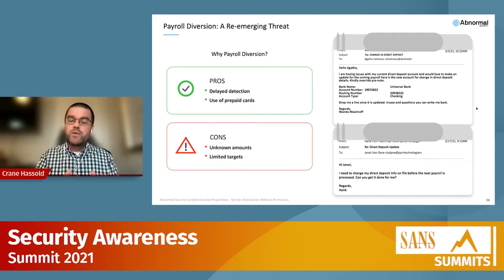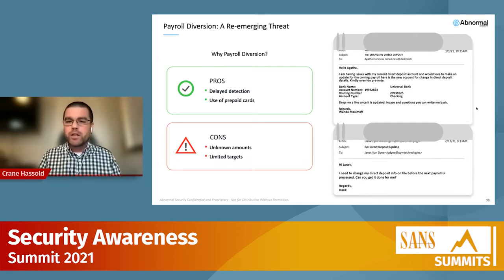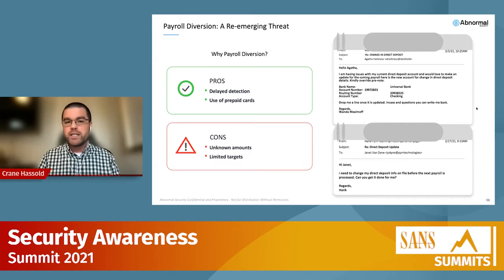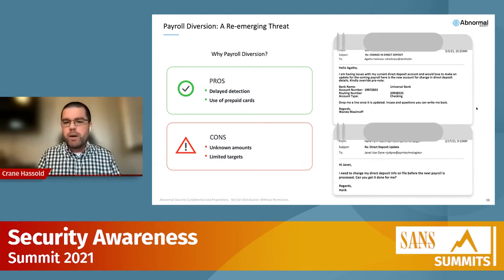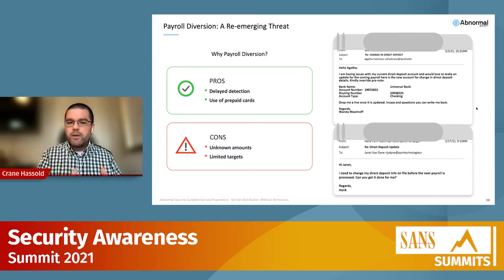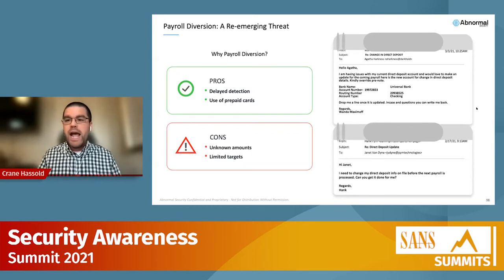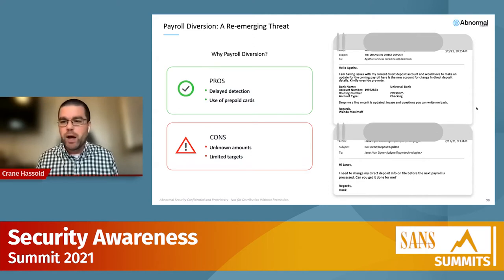Since the middle of last year, we've seen an almost consistent month-over-month increase in payroll diversion, now about 25% of all monthly BEC attacks. Detection is usually delayed — you're getting paid once every two weeks, so you might not notice the missing paycheck right away. That delayed detection increases the success rate that money will get passed on to the scammer without being retrieved by a financial institution.